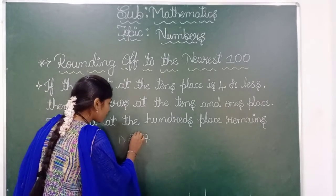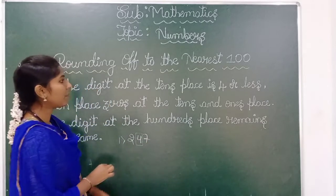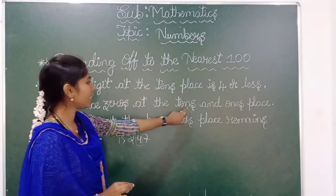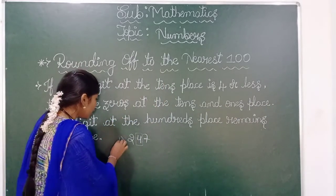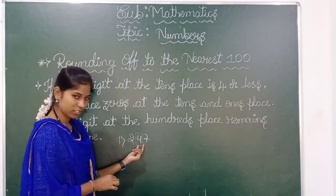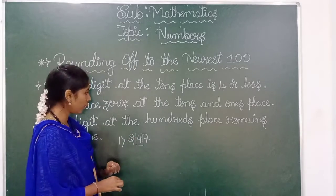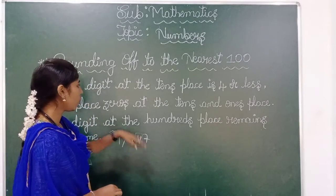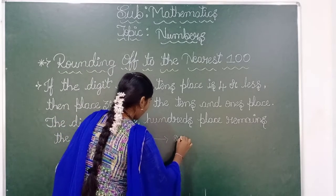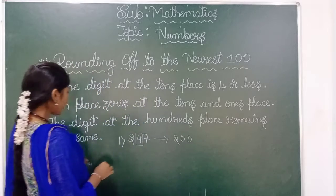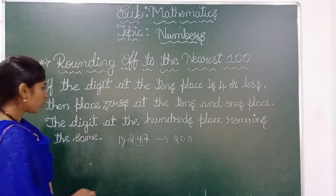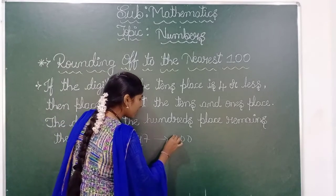So in this case, if the tens place digit is four or less than four, then place zero at the tens and ones place. While you are rounding off to the nearest hundred, if the tens place number is four or less than four, then the tens and ones places become zero. So it is rounding off to two hundred. The digit at the hundreds place remains the same.